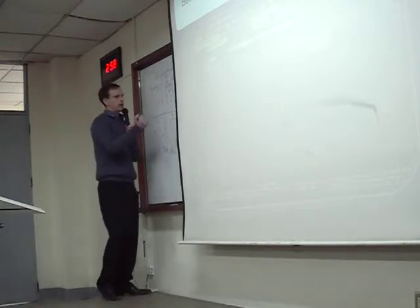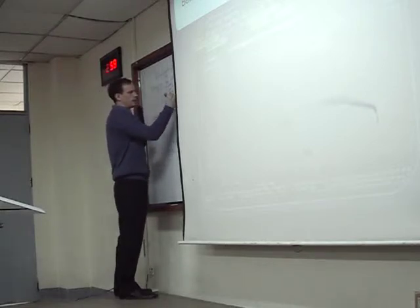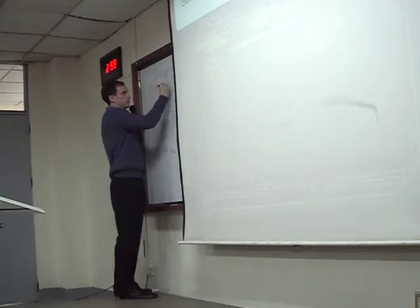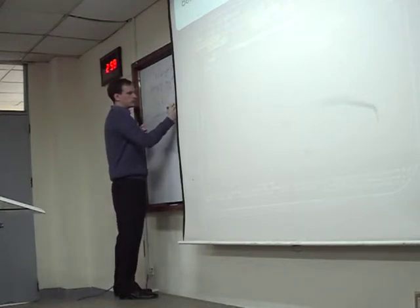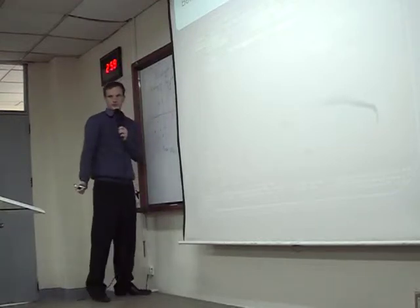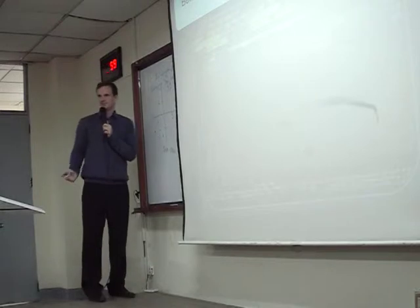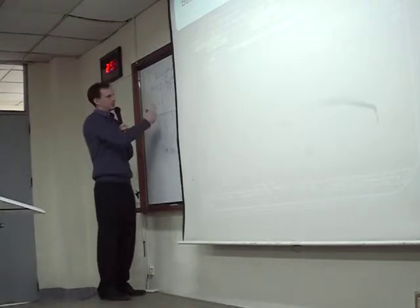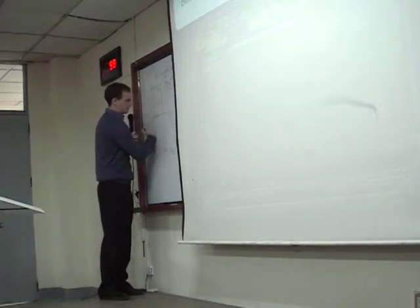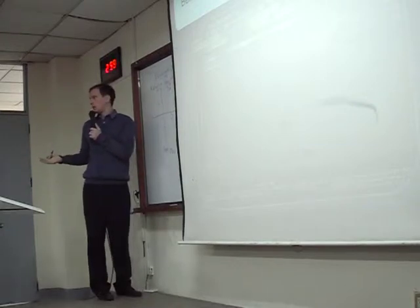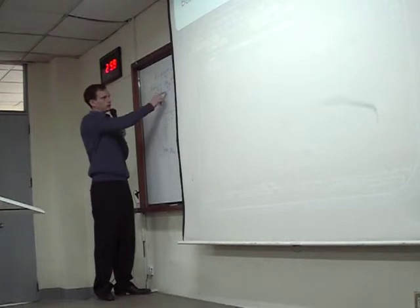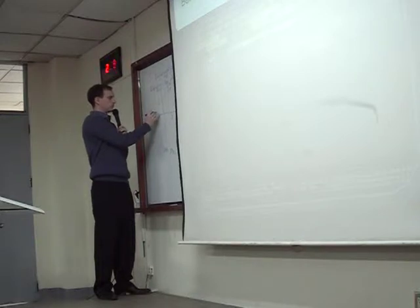Now let's take the video game company EA Games. In December, EA is down 4% while the S&P is up 10%. Why? Because the economy is going well, people are working overtime in the evening and don't have time to play video games. So the S&P is up 10%, but EA is down minus 4%.